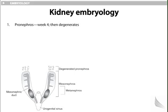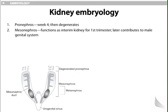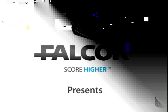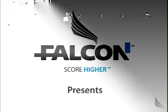Renal embryology begins with the pronephros in week four, which then degenerates. The mesonephros functions as an interim kidney for the first trimester and later contributes to the male genital system. The metanephros is permanent and appears during the fifth week of gestation; nephrogenesis continues through 32 to 36 weeks. The ureteric bud, derived from the caudal end of the mesonephros, gives rise to the ureter, the pelvis, and through branching, the calyces and collecting ducts — fully canalized by the 10th week.